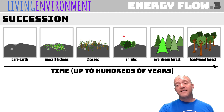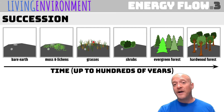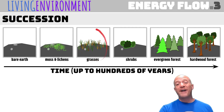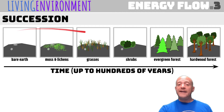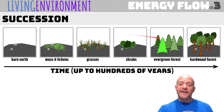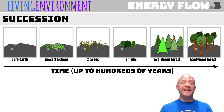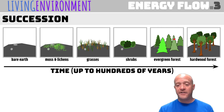Different climates are going to indicate what your final stage would be. You're not always going to get a hardwood forest or an evergreen forest. In Minnesota, where I'm from, it ends in grasses, so succession would only involve three stages. In areas like California, you will go to shrubs. In areas like Colorado and Wyoming, you will get to an evergreen forest. This is all dependent on the individual climates of a particular area.